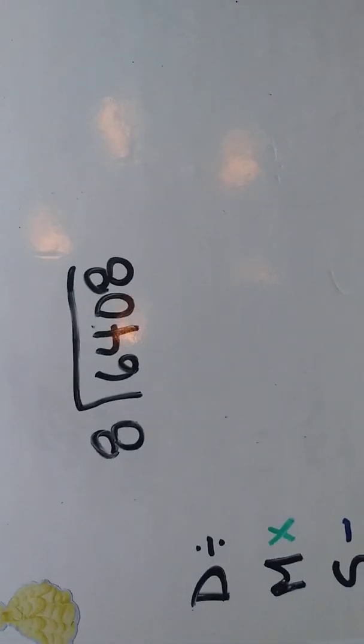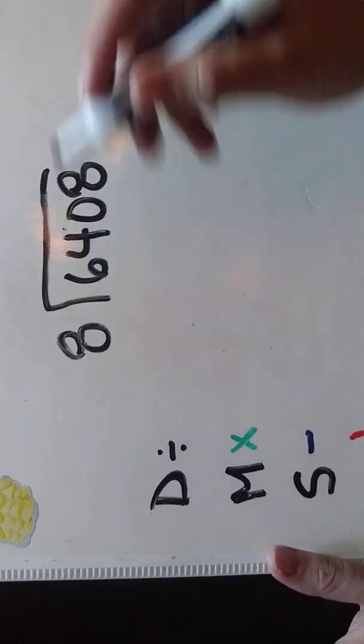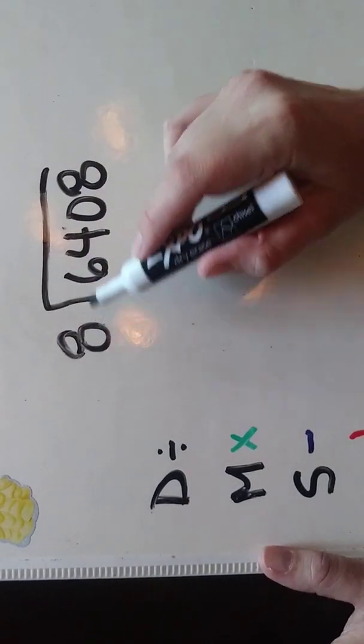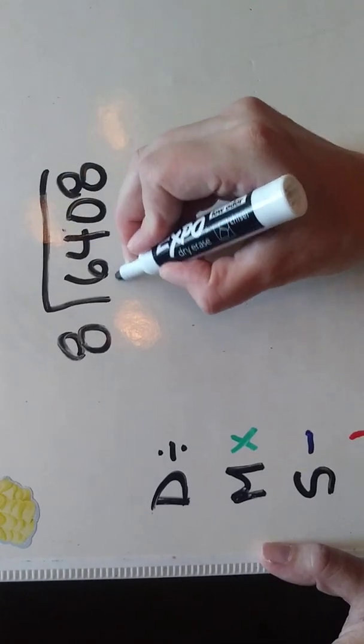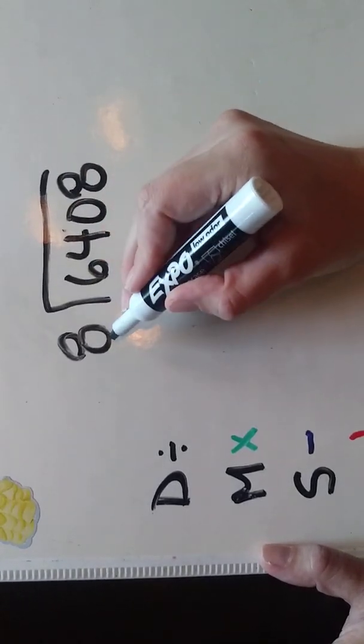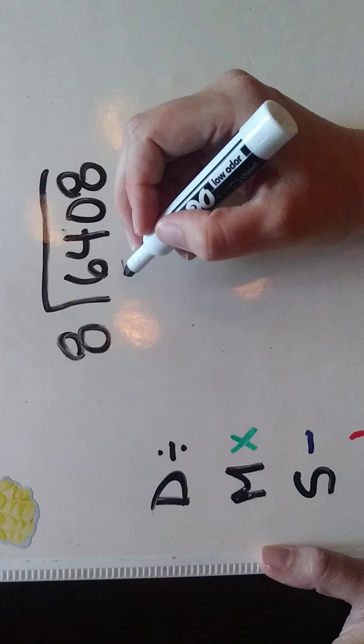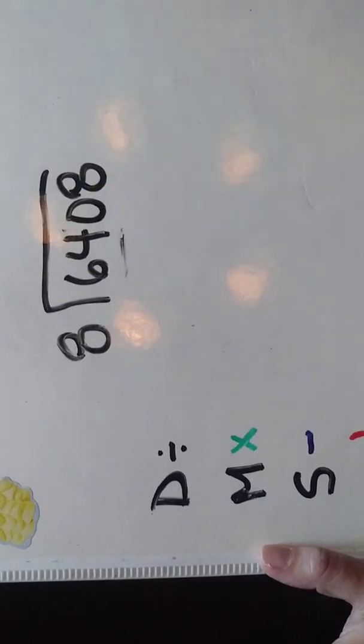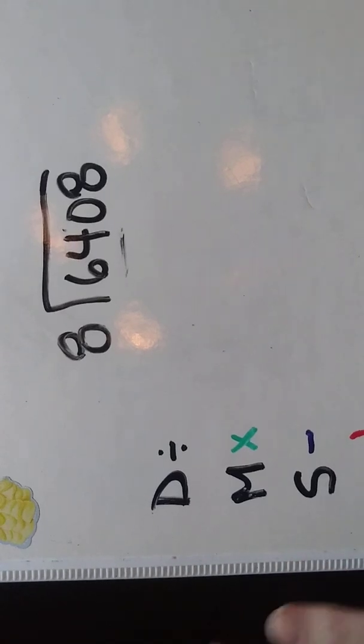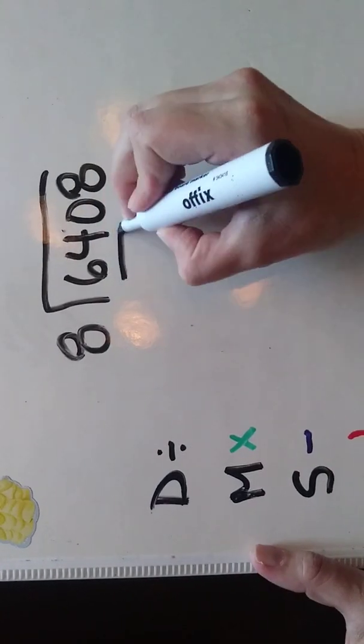Our first step that we're going to do here is division. I want to see how many times 8 is going into 6. Well, I know I can't do that because that number is not going to work. I can't do 8 times something is 6. So whenever that's the case, I always go to the next number and work there. So the next number is 64.